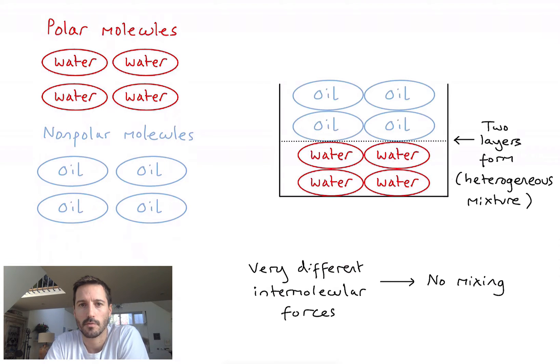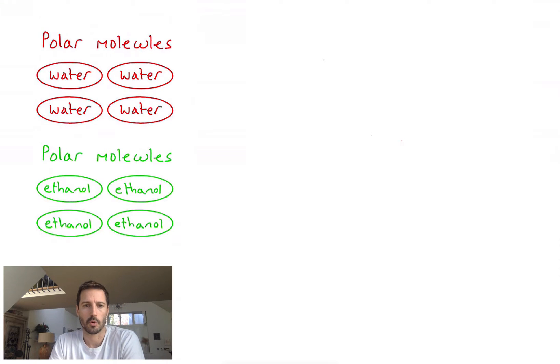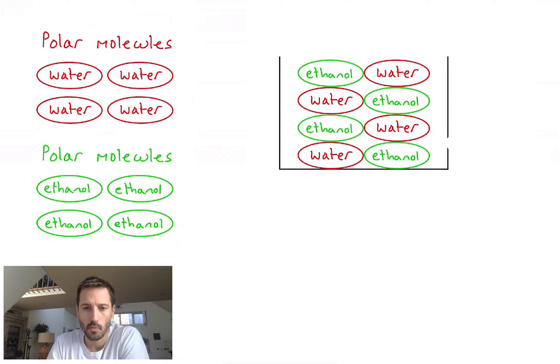How about then if we took two polar substances? Let's use water again and let's take another highly polar substance which would be ethanol. If I try and mix them together in a beaker, we find that actually we get some good mixing. We form a solution, which is also known as a homogeneous mixture, where my water and ethanol molecules are spread evenly throughout the solution. They have a uniform composition.